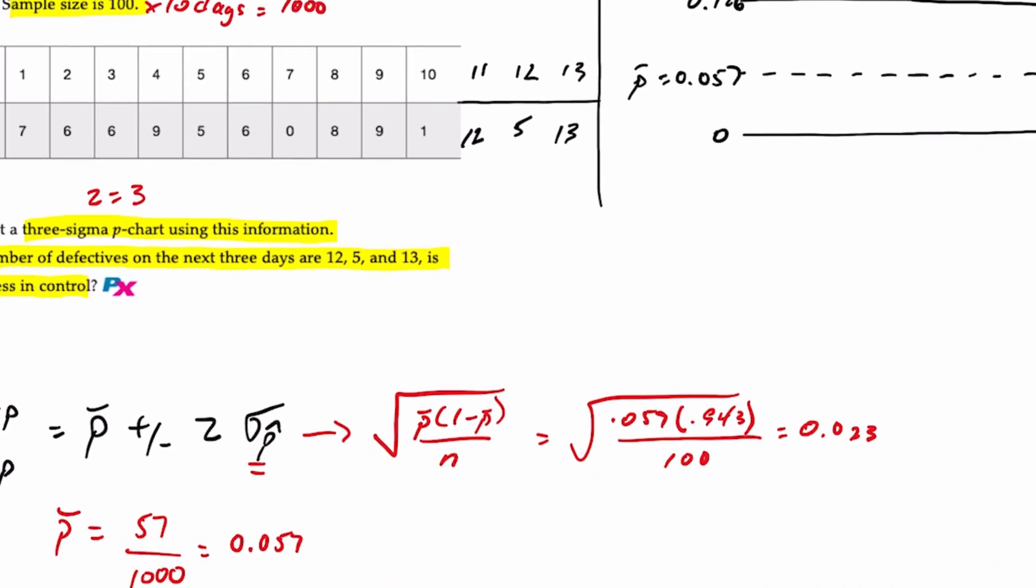we have an average where the center line is at 5.7%, with an upper control limit of 12.6%. Conveniently, because our sample size is 100, we can also say that the proportion of defectives in each sample for each day is whatever the number of defects is divided by 100.